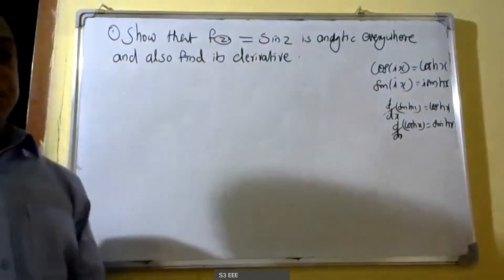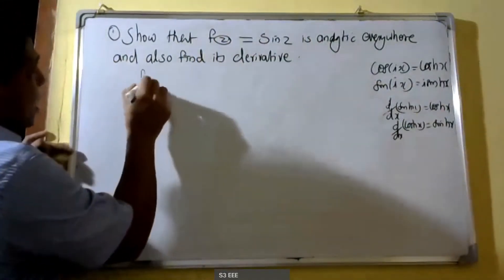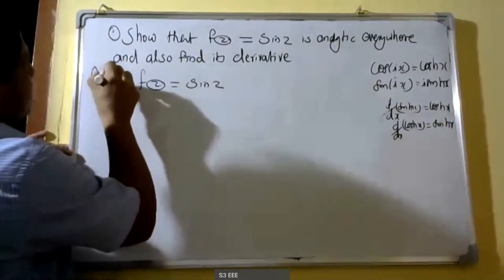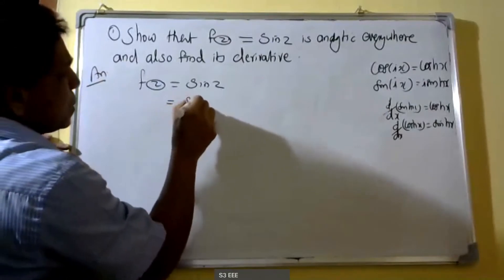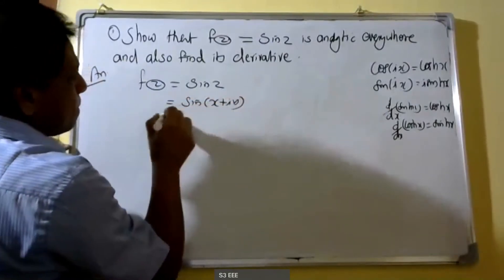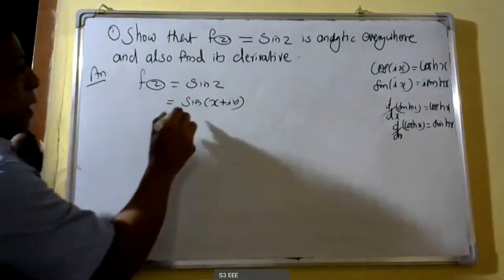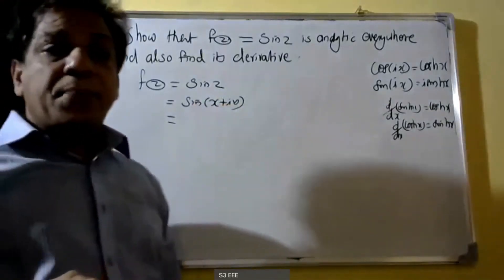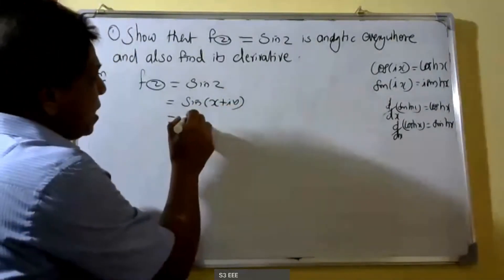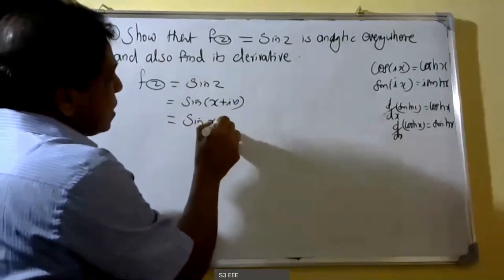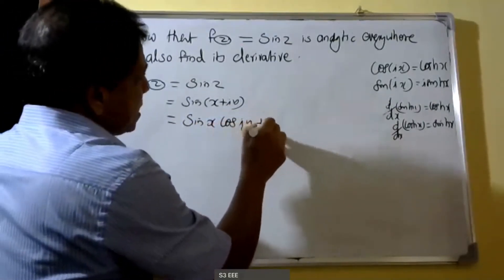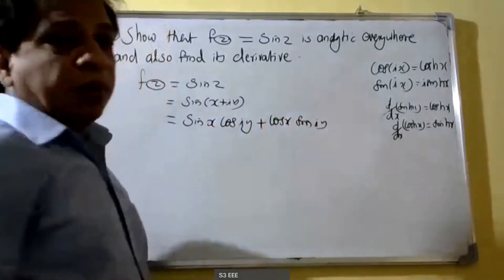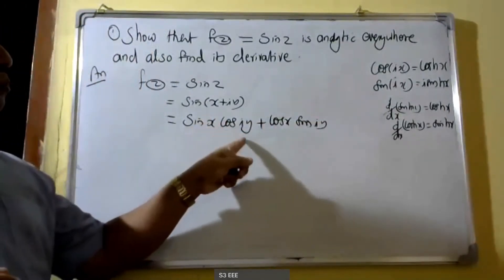f(z) = sin(z) = sin(x + iy). By using the trigonometric identity sin(a + b) = sin(a)cos(b) + cos(a)sin(b), we can show that sin(x + iy) = sin(x)cos(iy) + cos(x)sin(iy).